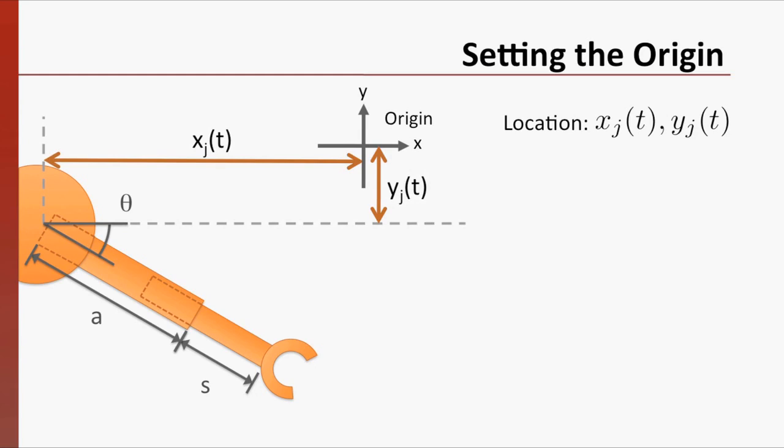We can use derivatives of these functions to describe any relative movement that the joint has when compared with our coordinate system, such as velocity or acceleration.